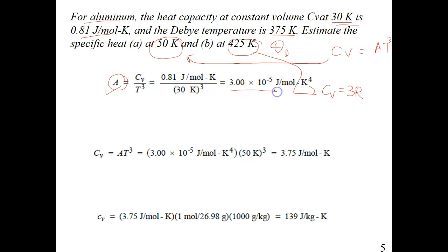And then when you got your A, you just substitute in this equation. This is your A that you calculated and this is your 50K, and you will get 3.75 joules per mole Kelvin for the answer in part A.